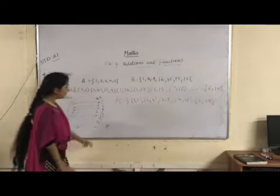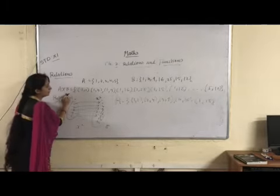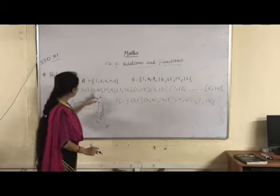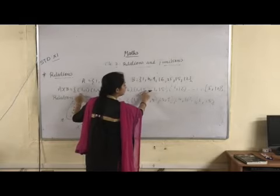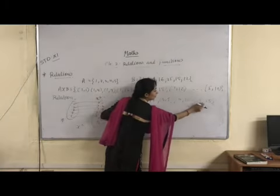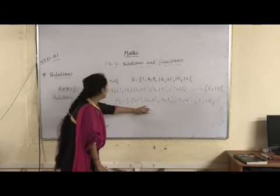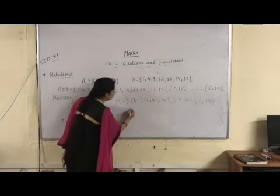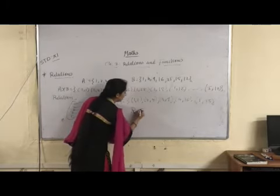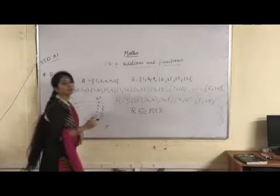Now observe this relation set and your A cross B Cartesian product. Observe: (1,1) is there in A cross B, yes. (2,4) also there, (3,9) is also a member of A cross B, (4,16), (5,25). You can observe that all elements of a relation set are lying within the cross product A cross B. So it means what we can conclude here: relation R is a subset of A cross B Cartesian product.